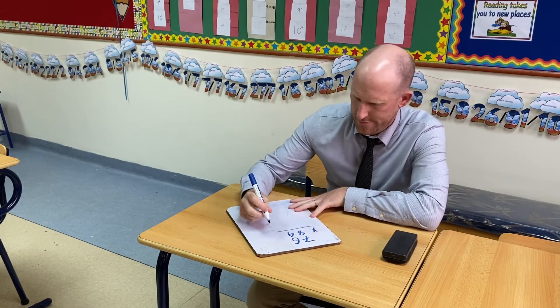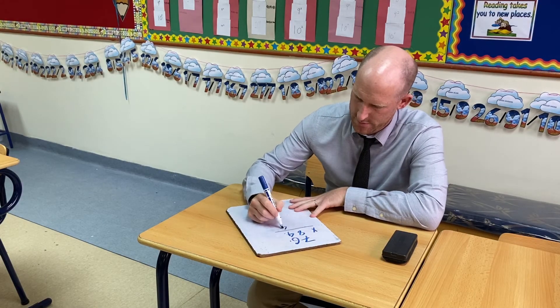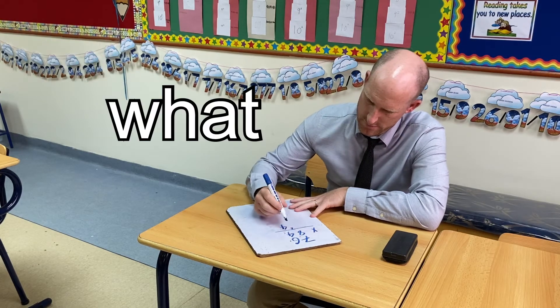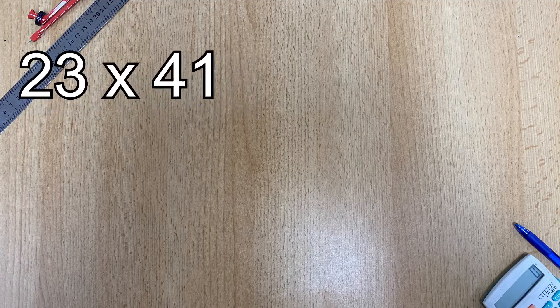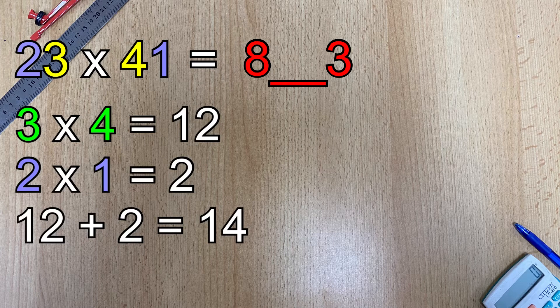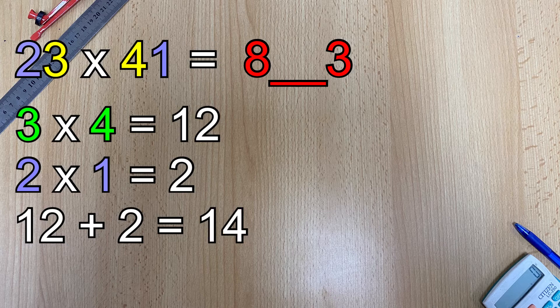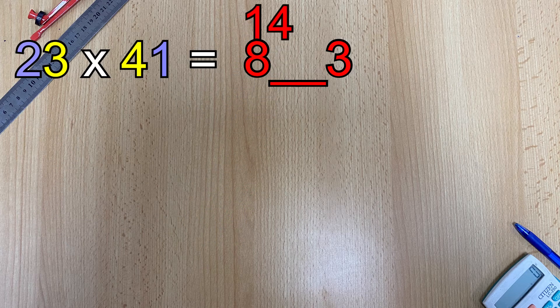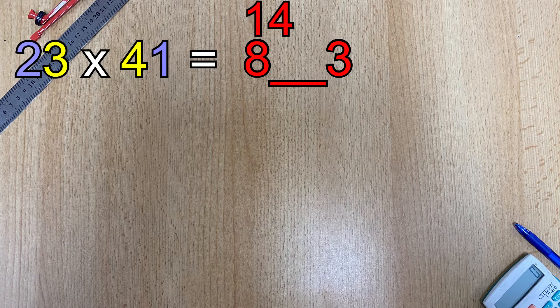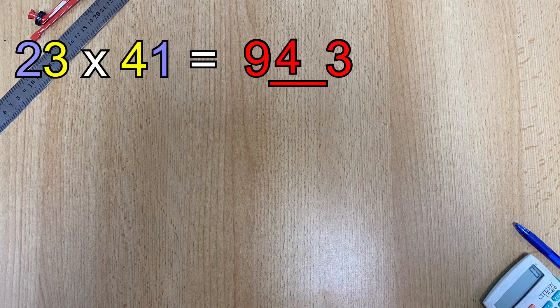But as I started to practice this new method my maths brain then thought but what if? What if the calculation I was doing gave me an answer that was two digits? How would that fit into the gap? The unit goes into the gap and the number in the tens is added on to the number on the left.